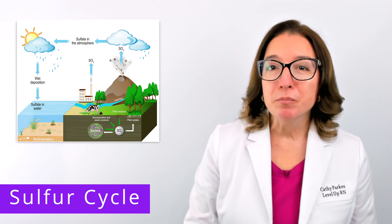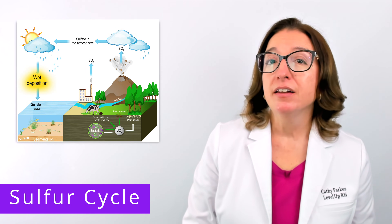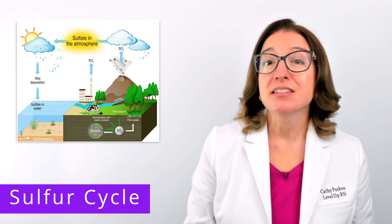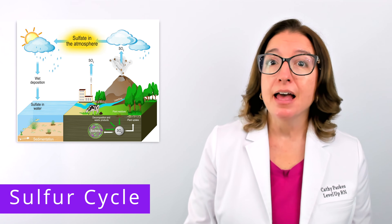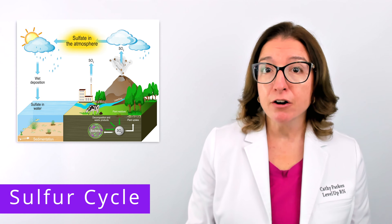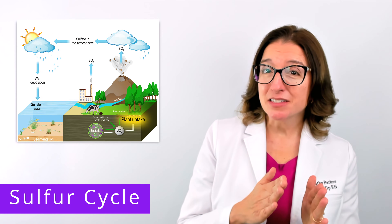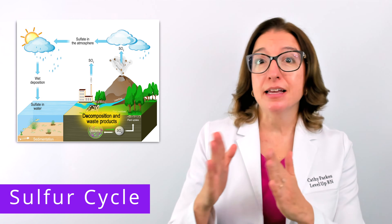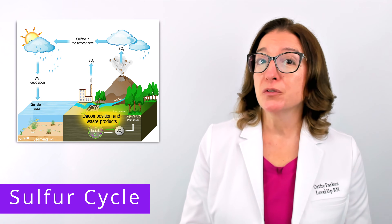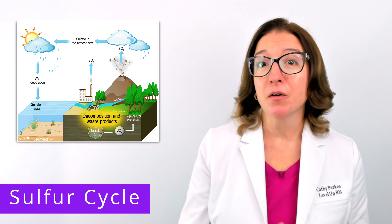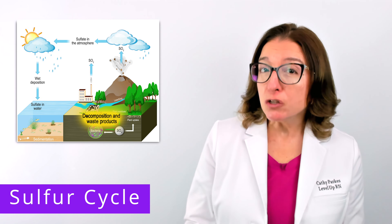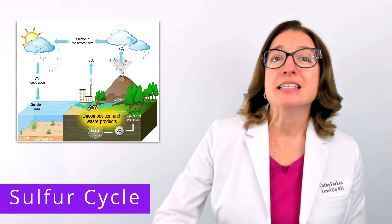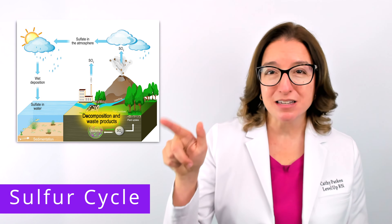Let's now review the key components of the sulfur cycle. Sulfur is found in the atmosphere as sulfur dioxide and is dissolved in precipitation. It is also released by rocks via weathering and combines with oxygen in the air to form sulfate. Plants take in sulfur, and some plants are consumed by animals. During decomposition of plants and animals, microbes — which include some of the oldest prokaryotic organisms on the planet — remove sulfur groups from the amino acids. This produces hydrogen sulfide gas, which is released into the atmosphere, starting the whole process over again.